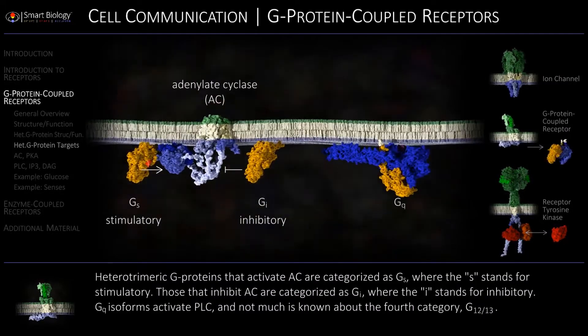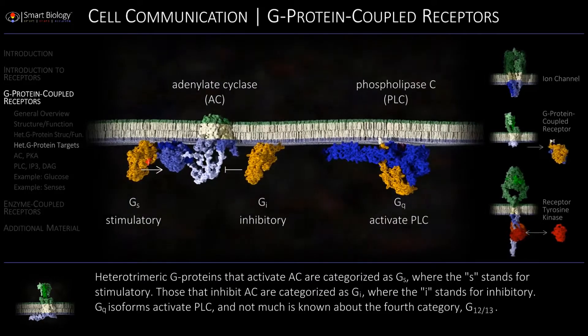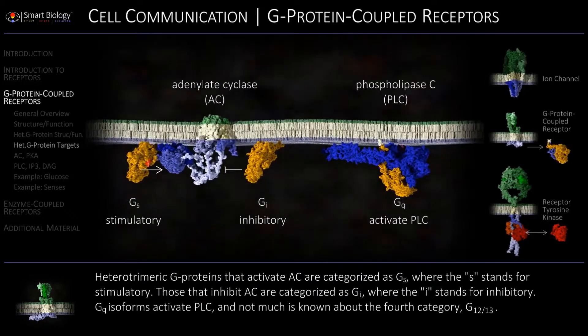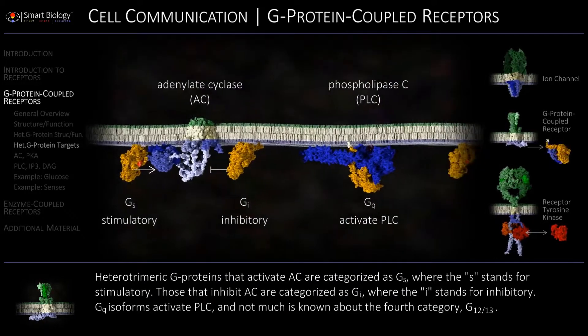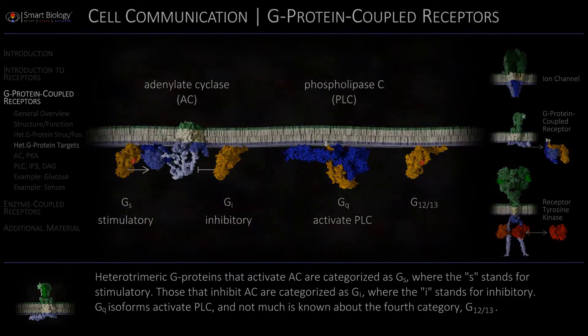Gq isoforms activate PLC, and not much is known about the fourth category, G12-13.